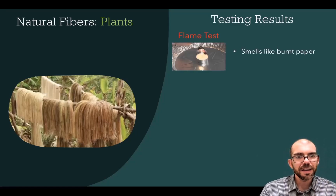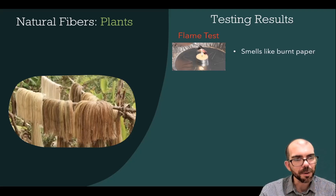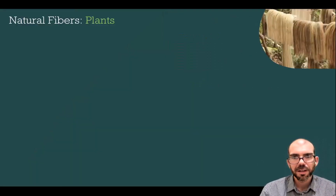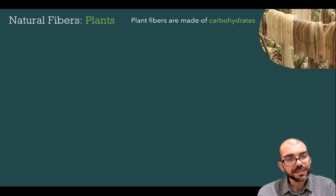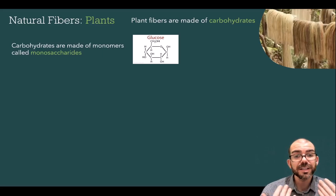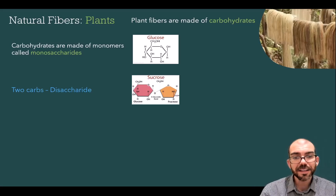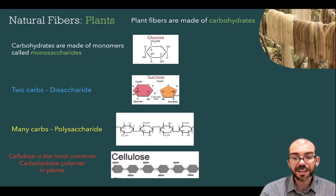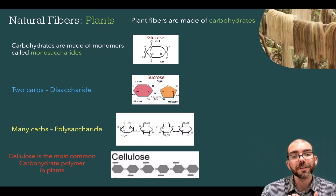Applying common tests to plant fibers: if you light a fiber on fire and it smells like burnt paper, you are working with a plant fiber. However, if you apply an acid, it will dissolve all plant fibers. Plants are made out of carbohydrates instead of proteins. Carbohydrates are made out of monomers called monosaccharides — saccharide means sugar, mono means one. Glucose is a common monosaccharide. Two monomers together form a disaccharide, and many monomers together form a polysaccharide. Cellulose is the most common carbohydrate polymer; if you're working with a plant fiber, odds are it's made out of cellulose.